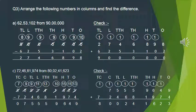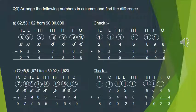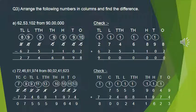Question 3: Arrange the following numbers in a column and find the difference. This is also the same as Question 2. The difference here is that in Part A it is given as: 62,53,102 from 90 lakh. That means you need to show it in column form — write the 'from' number on top because it is the bigger number, so we write 90 lakh first and then 62,53,102 below it.